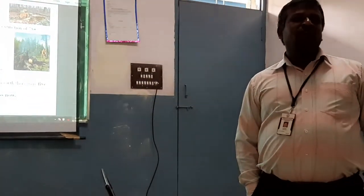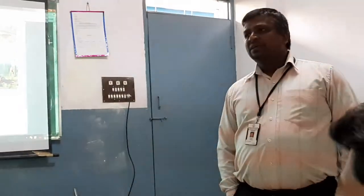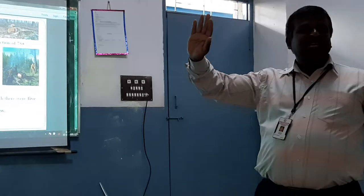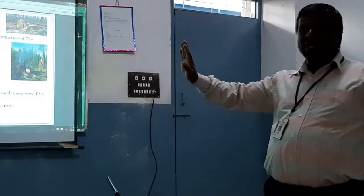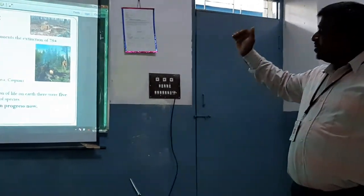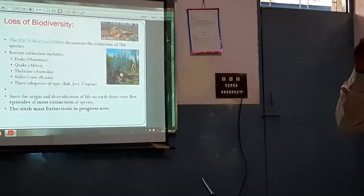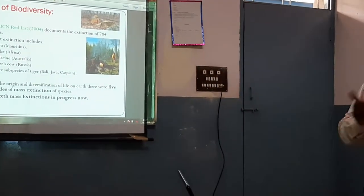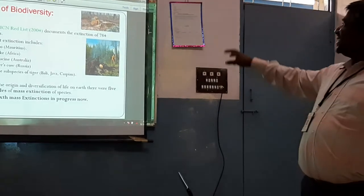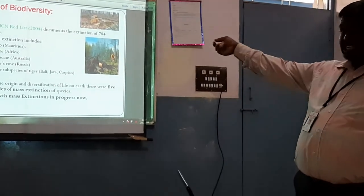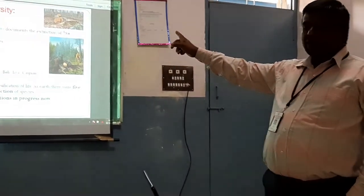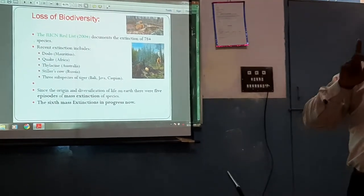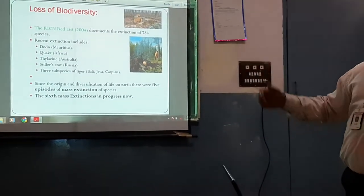Now, loss of biodiversity — this has been asked in exams many times. I will give a brief introduction and continue in the next class. The IUCN — the International Union for Conservation of Nature and Natural Resources — according to 2004 data, has documented the extinction of 784 species completely vanished from earth.